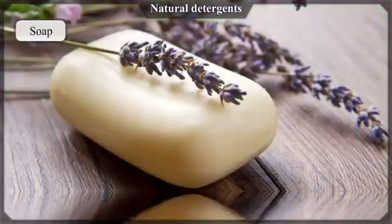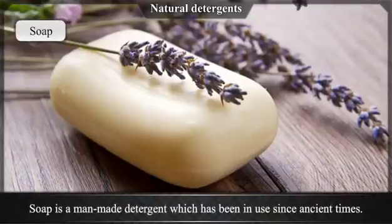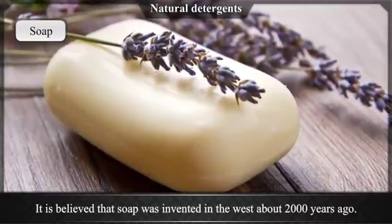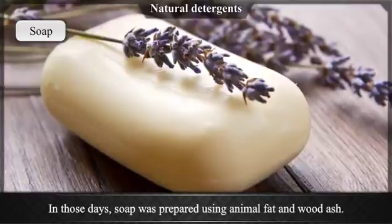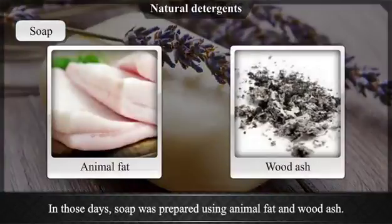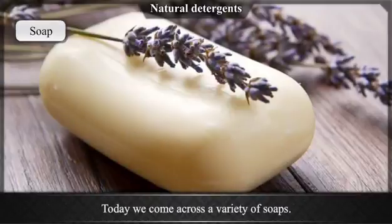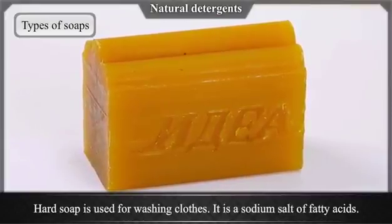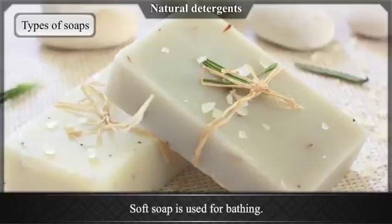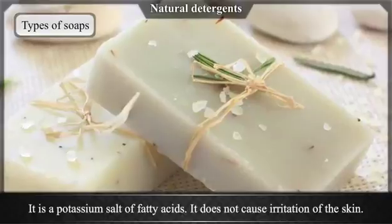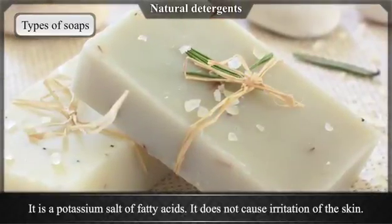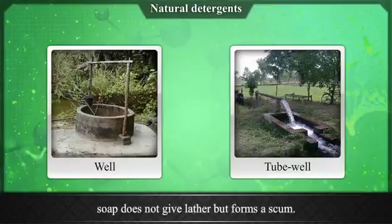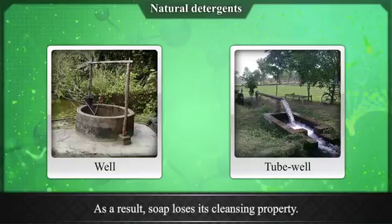Man-made detergent — Soap: Soap is a man-made detergent which has been in use since ancient times. It is believed that soap was invented in the west about 2,000 years ago. In those days, soap was prepared using animal fat and wood ash. Today we come across a variety of soaps. Hard soap is used for washing clothes; it is a sodium salt of fatty acids. Soft soap is used for bathing; it is a potassium salt of fatty acids and does not cause irritation of the skin. In the hard water of a well or tube well, soap does not give lather but forms a scum, causing it to lose its cleansing property.